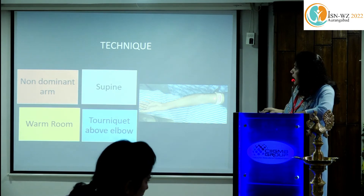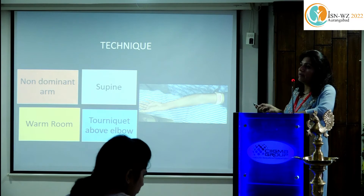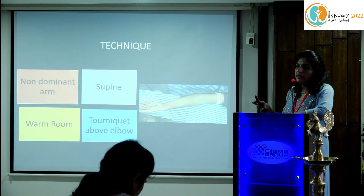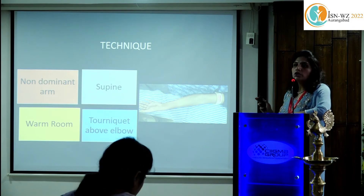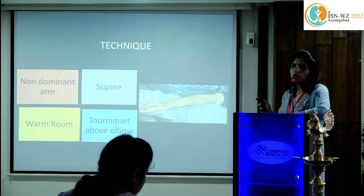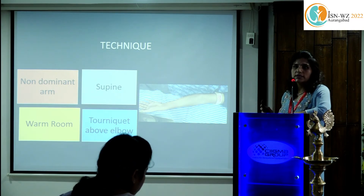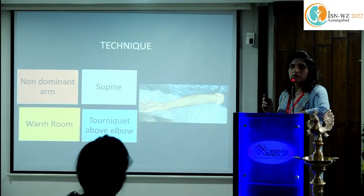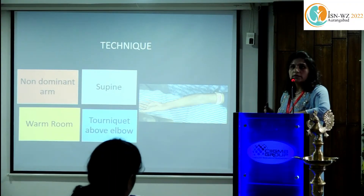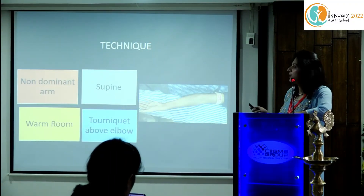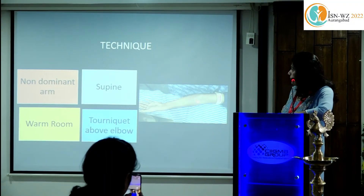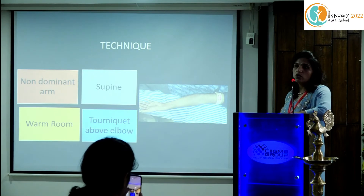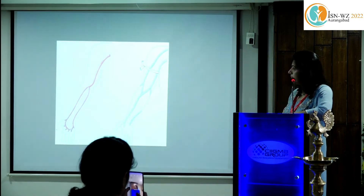A tourniquet is tied above the elbow level, but for arterial evaluation you do not require one. It is suggested to start with arterial evaluation first, then tie the tourniquet above the elbow level and proceed with evaluation of the venous system.